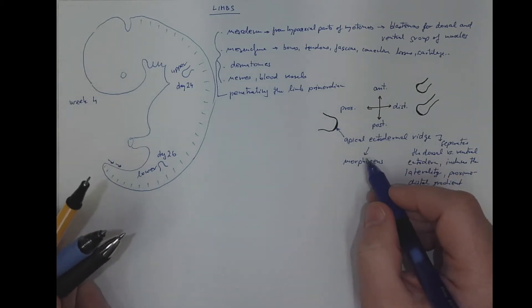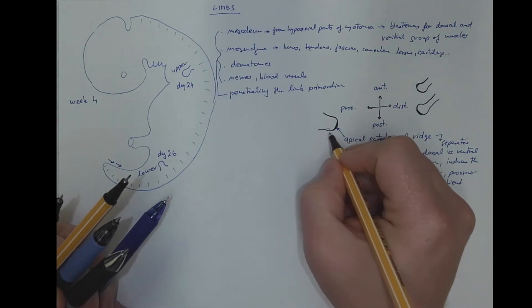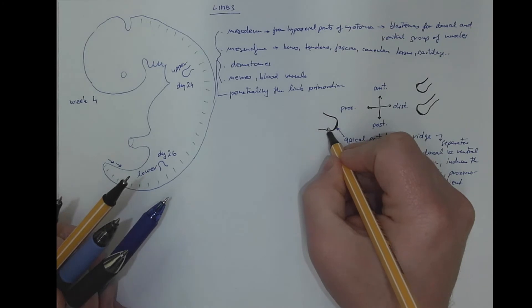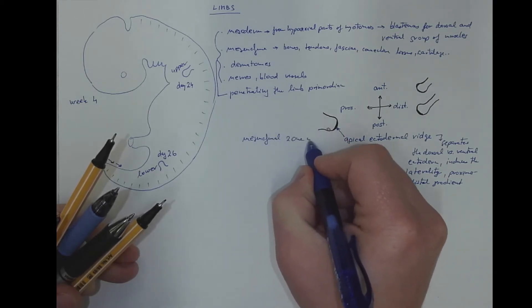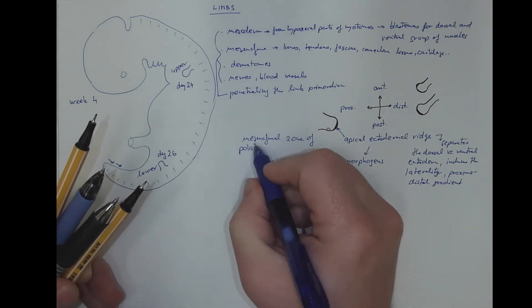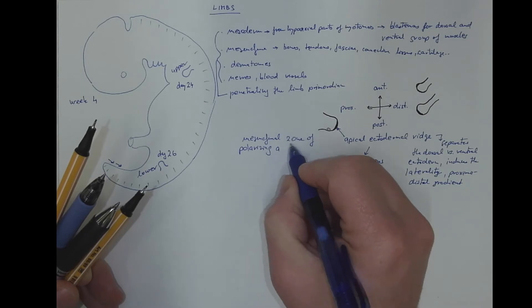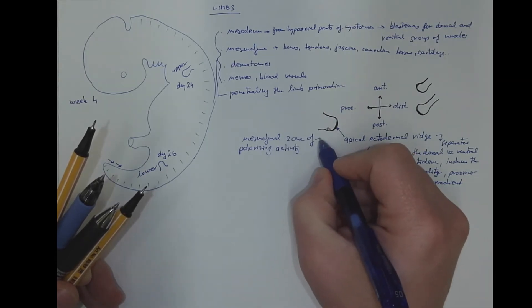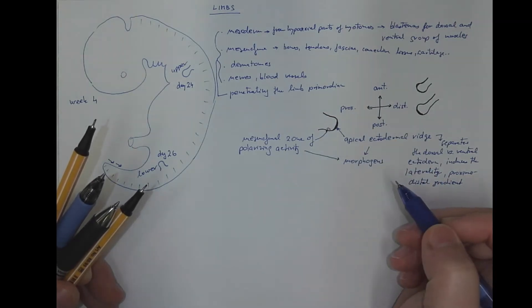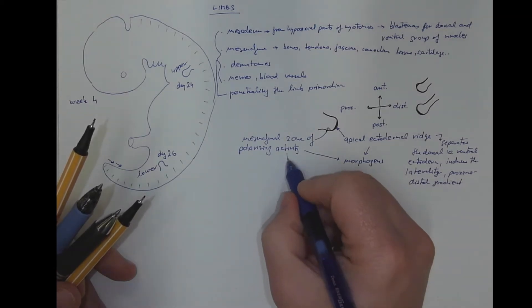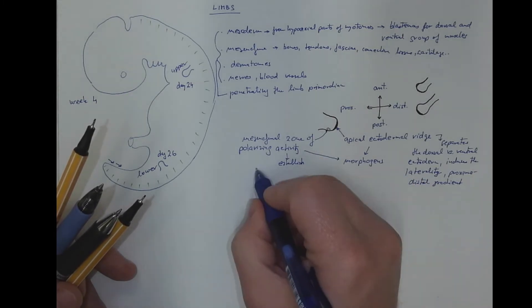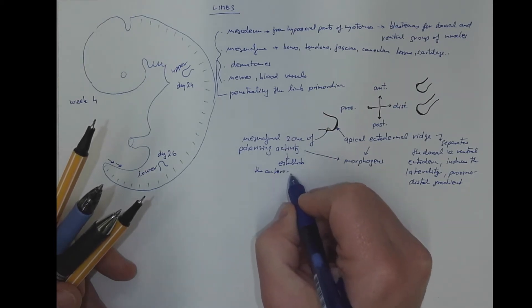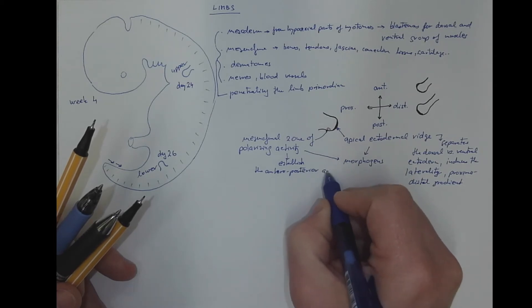There is also a zone, a mesenchyma zone of proliferation activity on the posterior part, zone of polarizing activity, which also produces morphogens that help to establish the anterior-posterior axis of the limb.